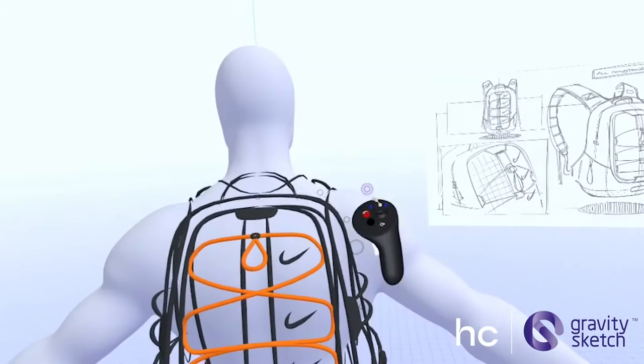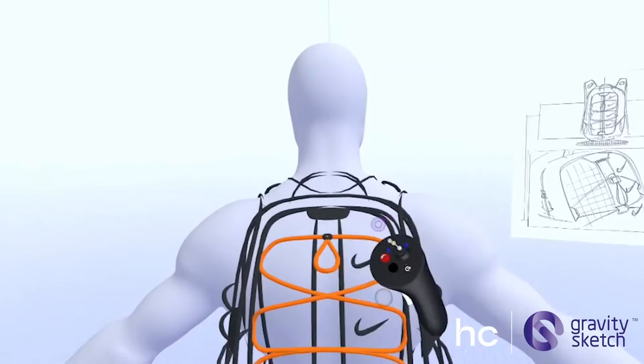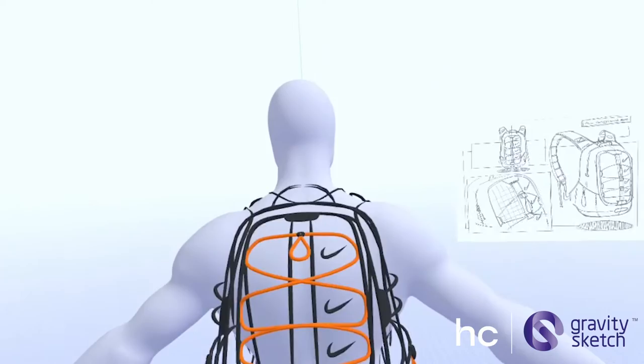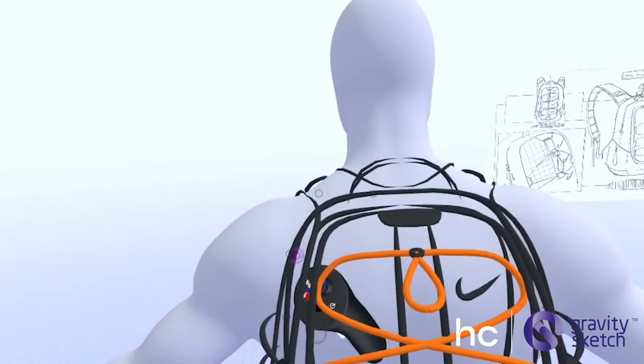I think the backpack's looking a bit too square, so I might just round up some of these corners. Again, this is great. I can just go in and you could easily just copy and paste all of this and iterate and redo it. I think we're getting close to finishing now. It's looking really good. I'm very happy with this.